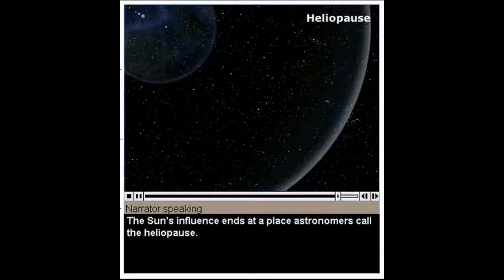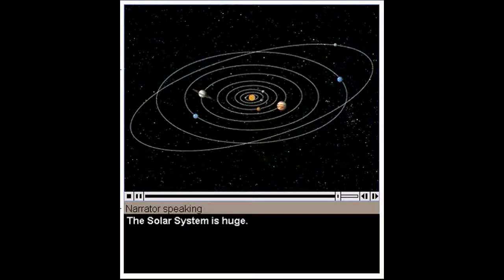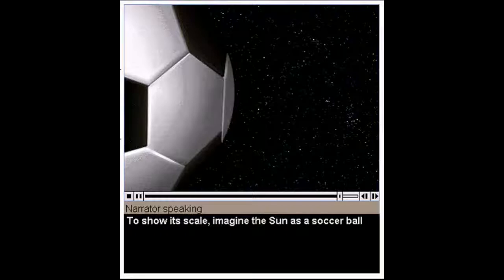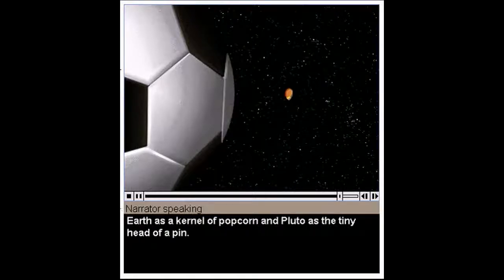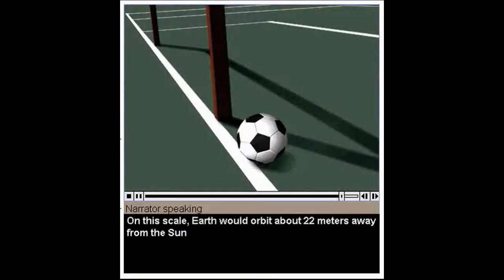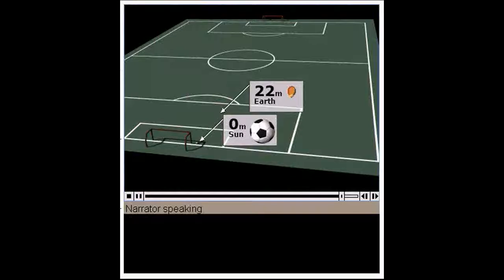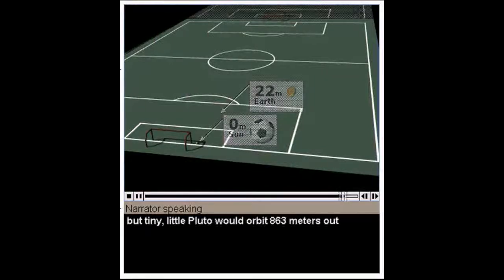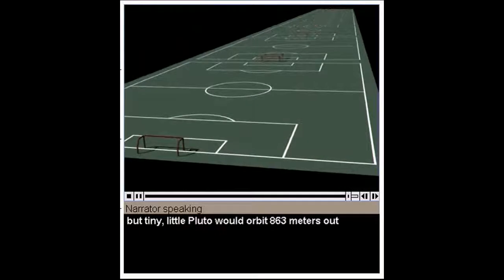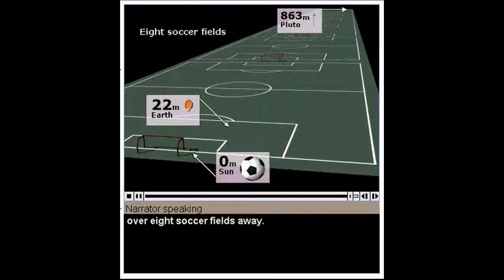The Oort cloud contains many comets that take a long period of time to orbit the sun. The sun's influence ends at a place astronomers call the heliopause. The solar system is huge. To show its scale, imagine the sun as a soccer ball, Earth as a kernel of popcorn, and Pluto as the tiny head of a pin. On this scale, Earth would orbit about 22 meters away from the sun. But tiny little Pluto would orbit 863 meters out. Over eight soccer fields away.